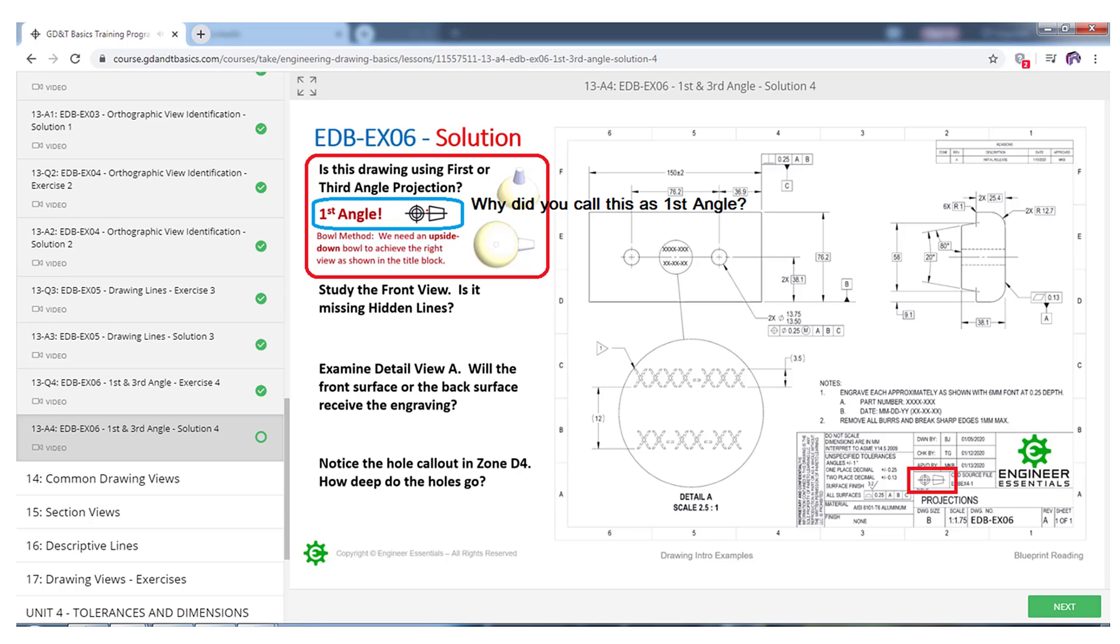This does indicate that it is first angle whether it's on the right hand side or the left hand side. We see it both ways, but you have to look at where the smaller diameter is to determine whether it's first angle or third angle.